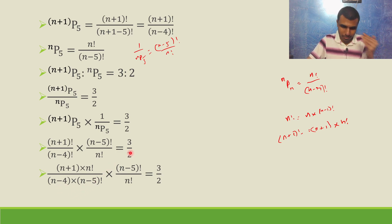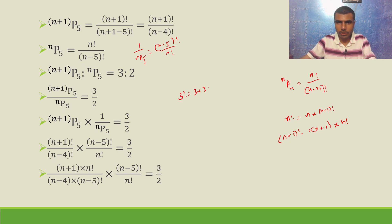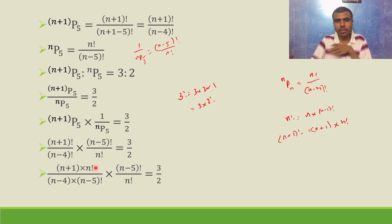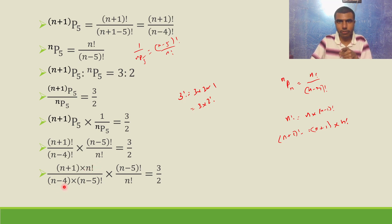To clarify: 3 factorial is 3 into 2 into 1, which is nothing but 3 into 2 factorial — that is 3 and 3 minus 1 factorial. Likewise, n+1 and n+1 minus 1 factorial means n factorial. And n minus 4 into n minus 4 minus 1 gives n minus 5 factorial.